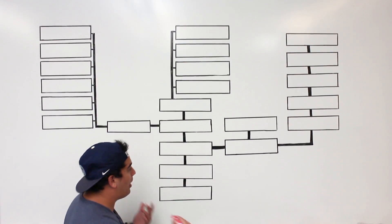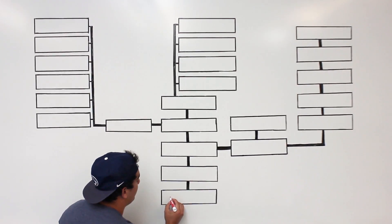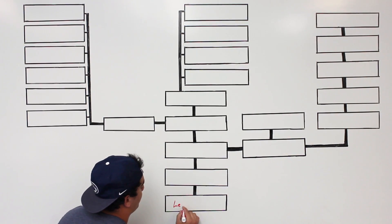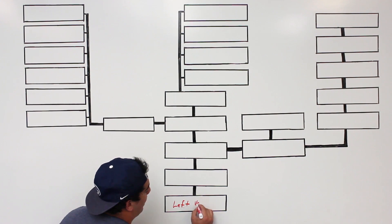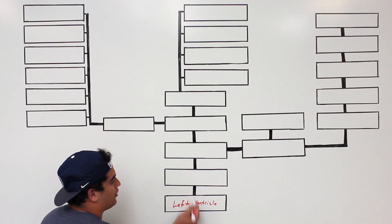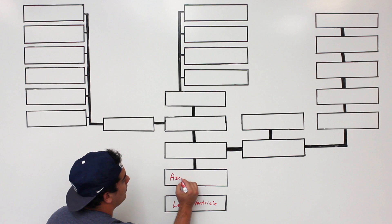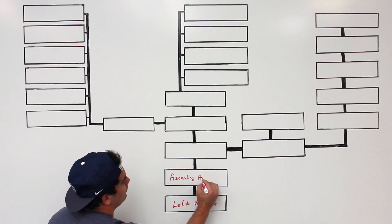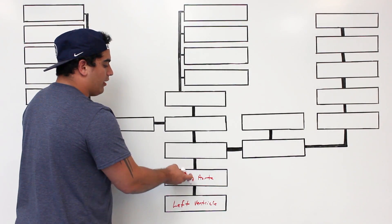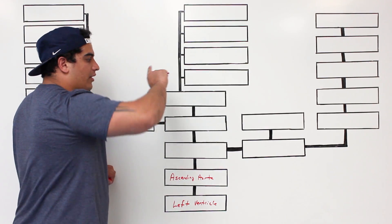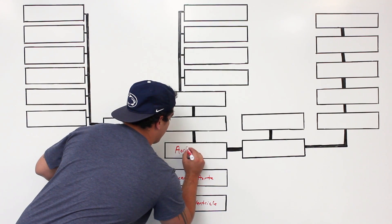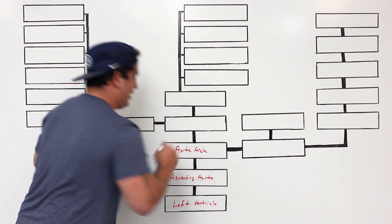We start with the left ventricle because it's the systemic pump. It's a very powerful muscle — when it contracts, it squeezes blood out of the left ventricle through the aortic semilunar valve into the ascending aorta. The ascending aorta goes up into the thoracic cavity where it begins to turn and form what's called the aortic arch.